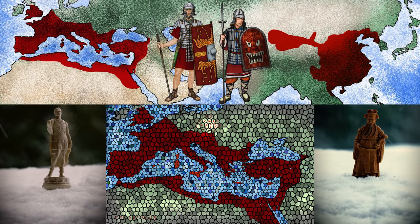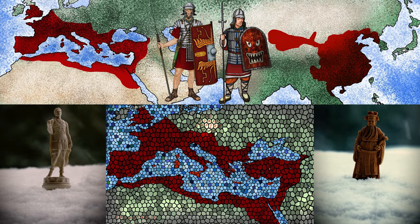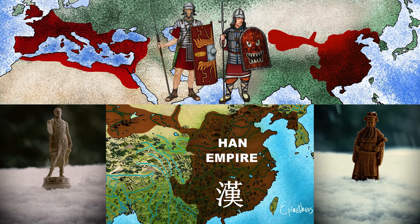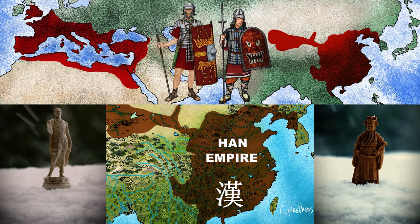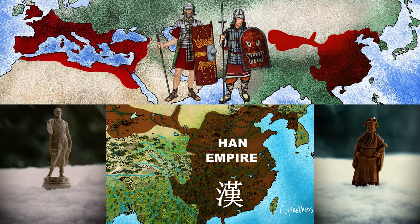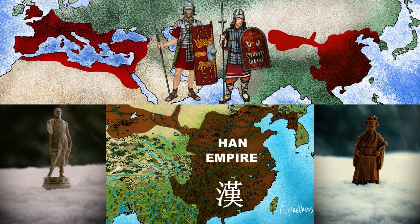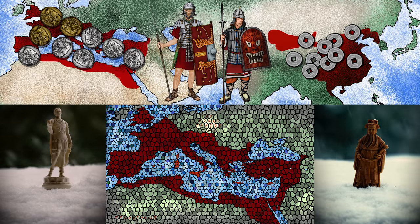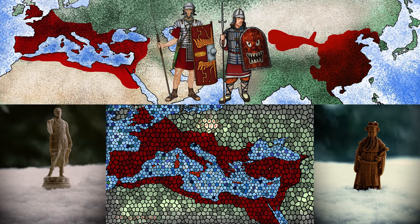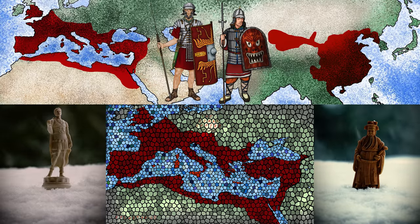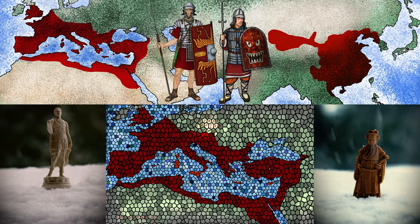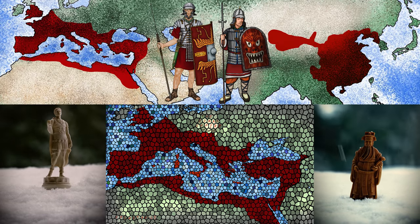To do this, both empires developed different effective solutions to solve similar problems. The Roman and Han empires had some major differences, as well as some macro-level similarities. Both empires had populations of over 50 million people, massive economies, large territories, and a system with one main man at the top of the power structure. This video will examine the different strategies these ancient empires used to maintain authoritarian systems of control over a staggering percentage of the Earth's population.